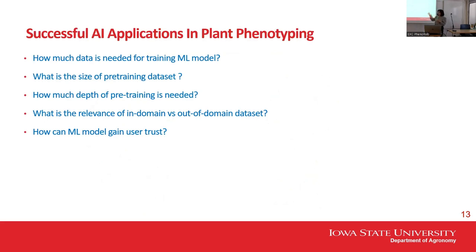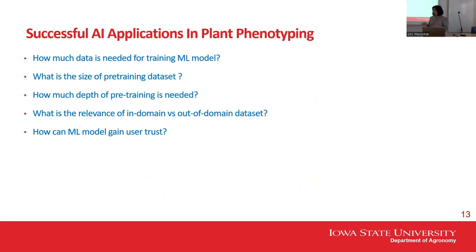These were the same kinds of challenges I faced when working with diseases. One of the biggest questions was: what data gives the highest accuracy and a model that works in the wild? Another challenge when using self-supervised learning is the size of pre-training data — which open dataset to pick, and how deep the pre-training should be. We also asked: do we use in-domain or out-of-domain data? For example, can we use out-of-domain ship or line images in plant science, or do we need plant science data?